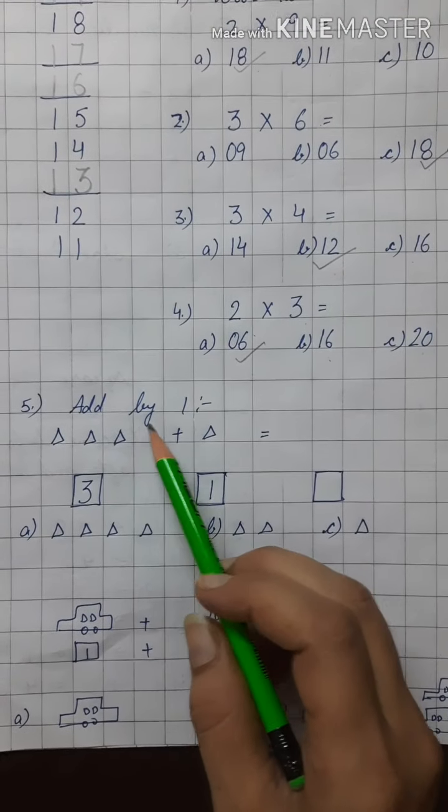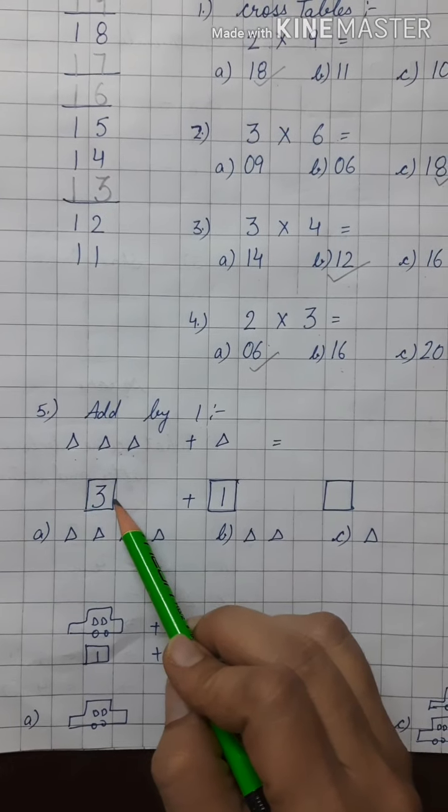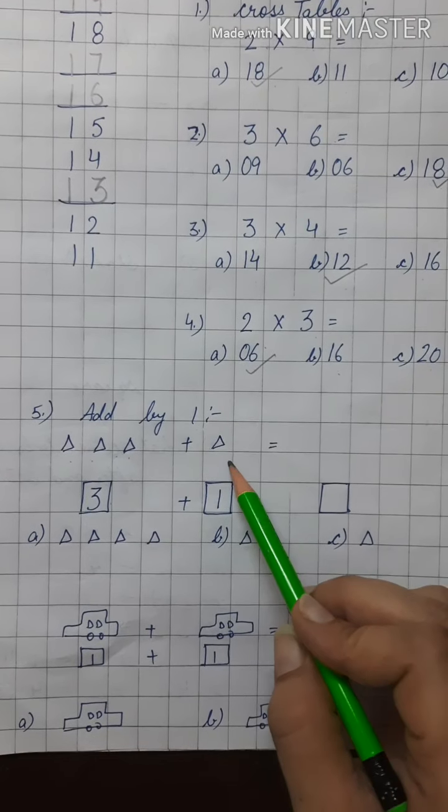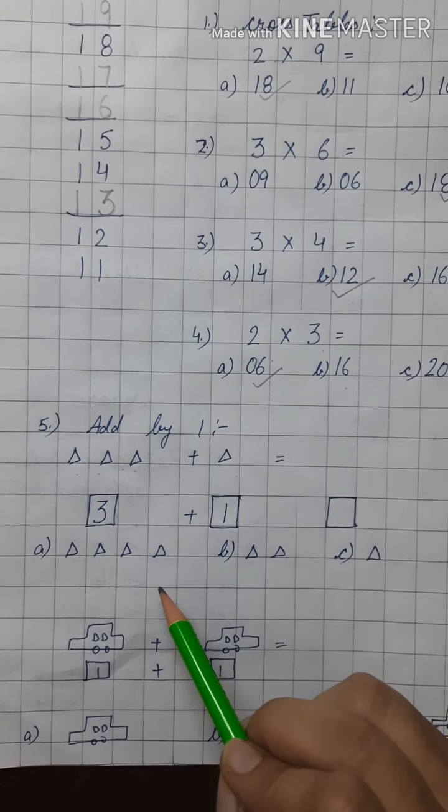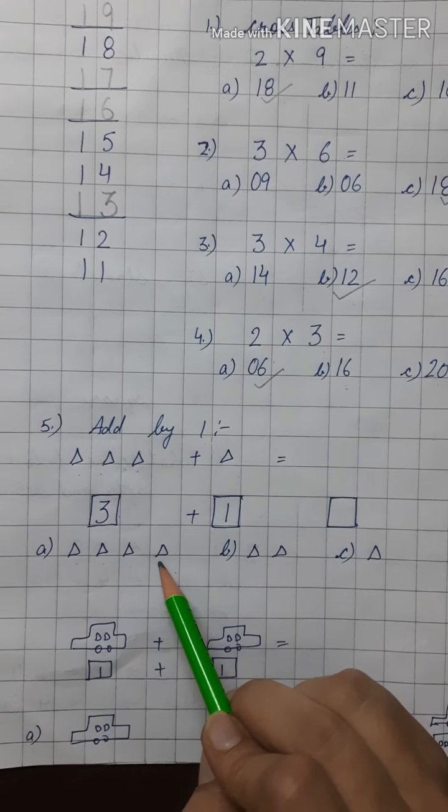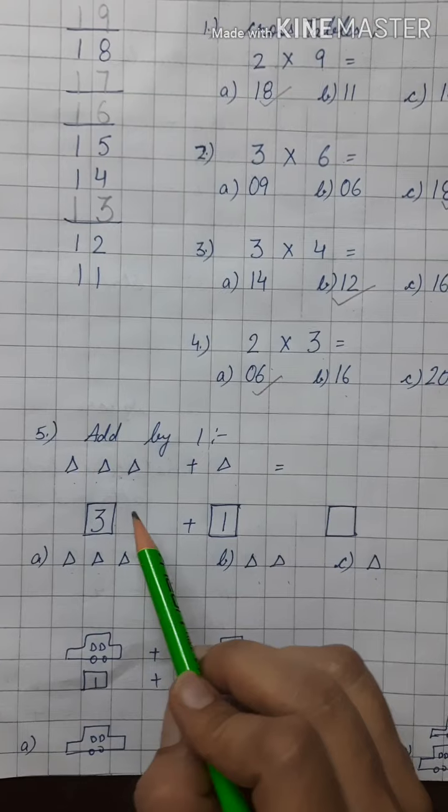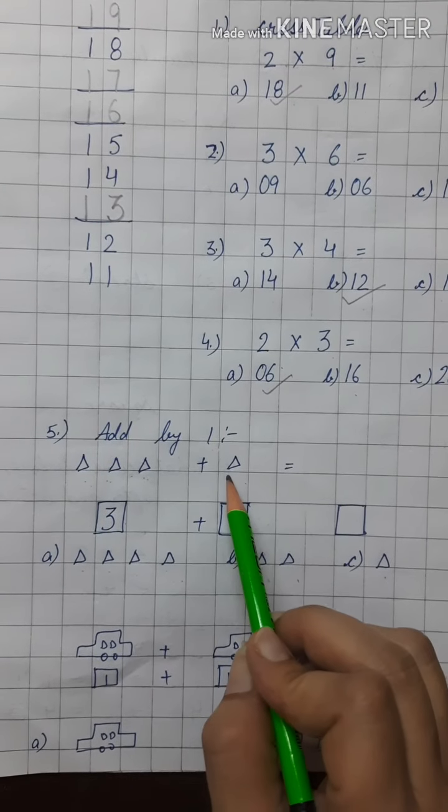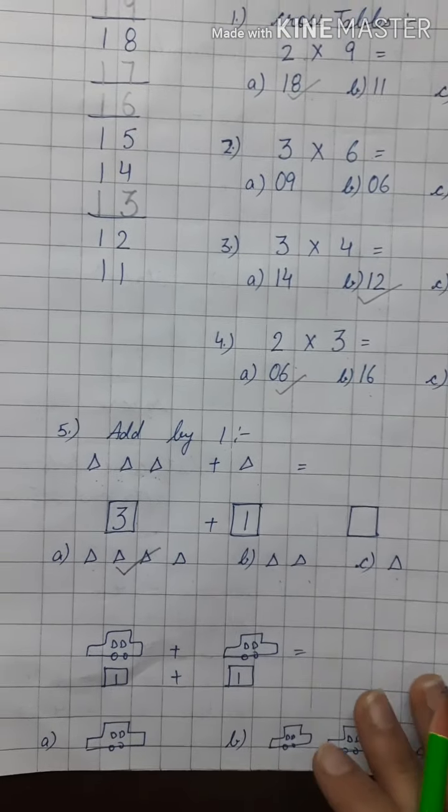Next question is add by 1. How many triangles are there? 1, 2, 3. 3 triangles. Now, I am going to add 1 triangle in these 3 triangles. How much they will become? 1, 2, 3, 4. So, we will tick the option A.